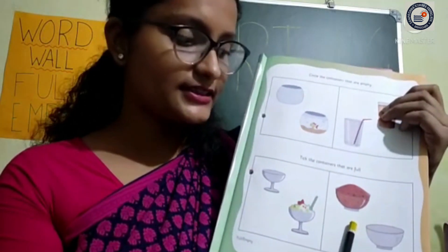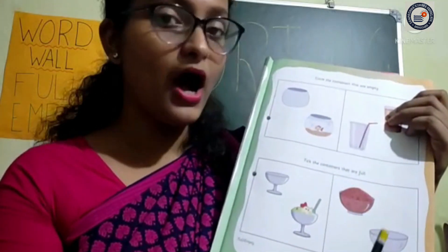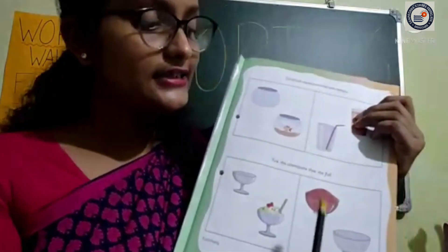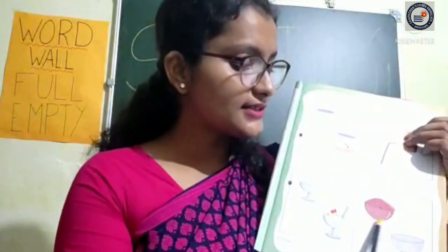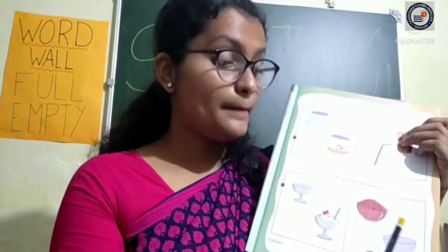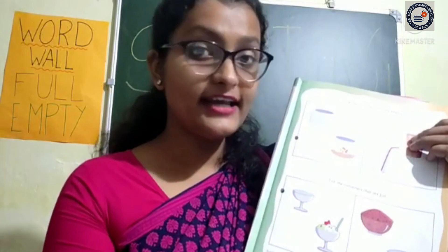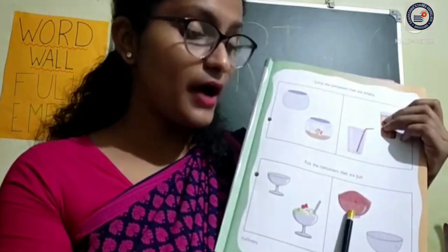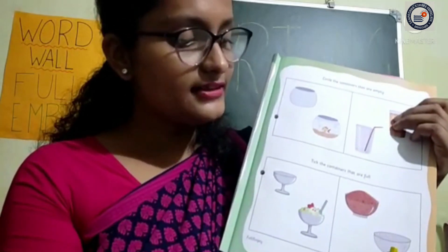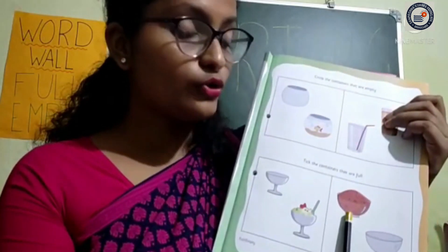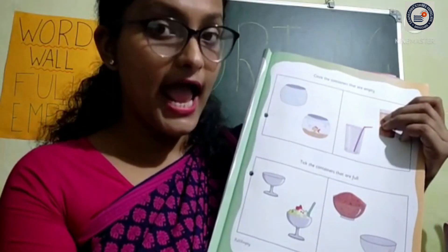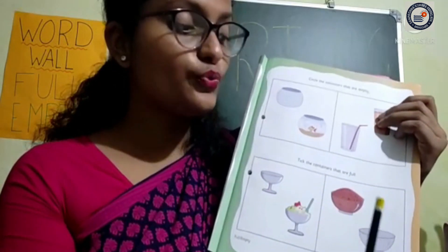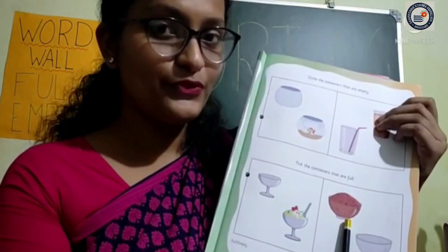Now, next — here we have bowls. In the first bowl, there is something, so it is full. In the second bowl, you cannot see anything, so it is empty. We have to tick the full one, so we have to tick this first bowl only.